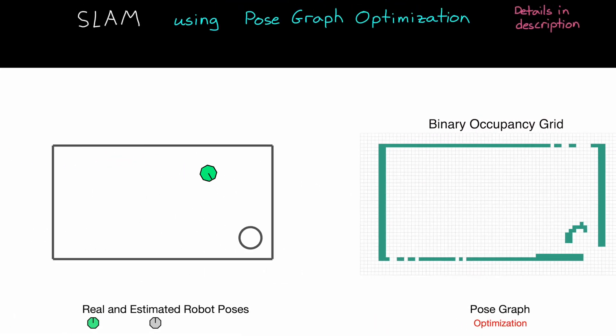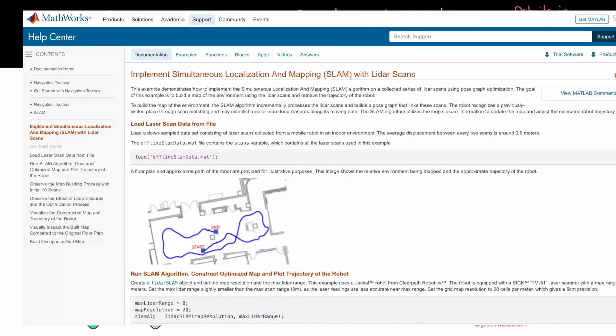So there we have it: SLAM using pose graph optimization. Hopefully now you can see how a map of the environment and the pose of the robot can be determined simultaneously with this method. And now that we have an occupancy grid map, we can start the process of planning a future trajectory through this environment. The robot no longer has to wander around aimlessly but can use this map to plan where it wants to go. And we're going to cover some ways to approach planning in the next video.